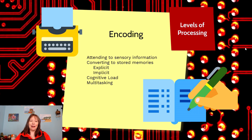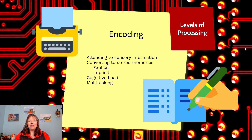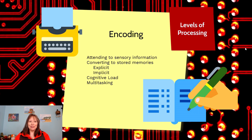Another thing to keep in mind is multitasking. Our consciousness ping-pongs back and forth between two or more tasks — we're never truly doing two things at once, even if measured in nanoseconds. When it comes to multitasking, you may not be encoding as effectively as you wanted. This is one of the reasons why texting while listening to a class lecture is not considered ideal.